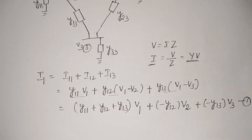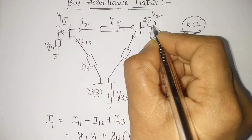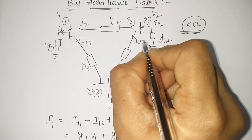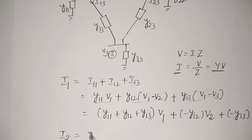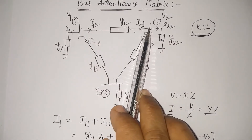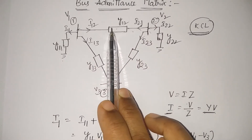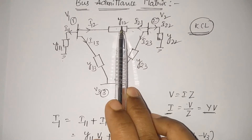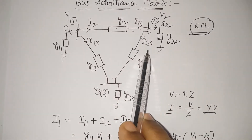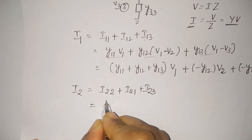Similarly, we apply KCL at node 2 or bus 2. Since current direction is not specified, we assume leaving. Let the currents be I22, I21, and I23. The impressed current at bus 2 is I2 equals I22 plus I21 plus I23. Since this is a symmetrical system, Y12 equals Y21, so I21 equals Y21 times (V2 minus V1).